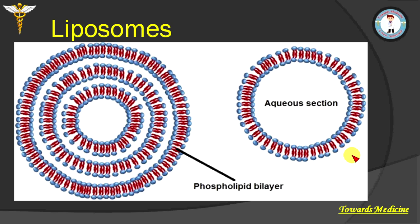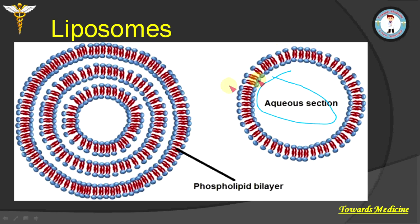There are two types of liposomes: unilamellar liposomes and multilamellar liposomes. In a unilamellar liposome there is a single lipid bilayer surrounding the aqueous solution. In multilamellar liposomes there are multiple lipid bilayers, and between the lipid bilayers an aqueous solution is present.